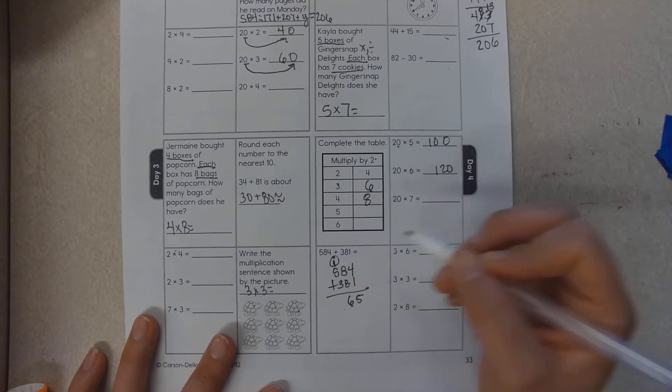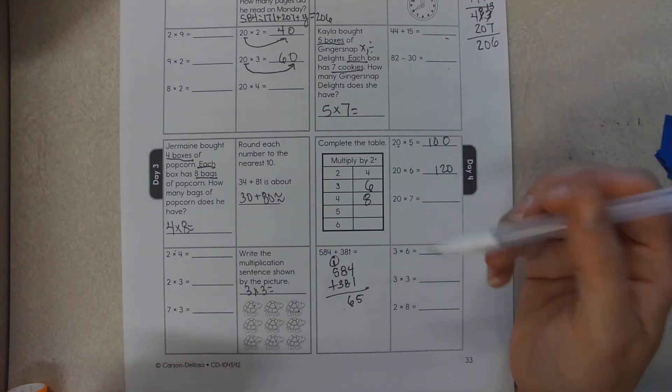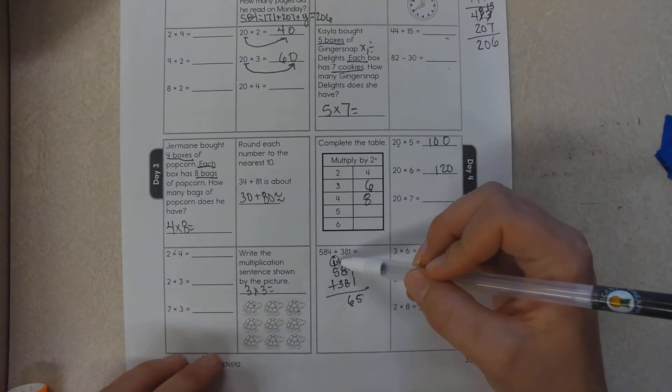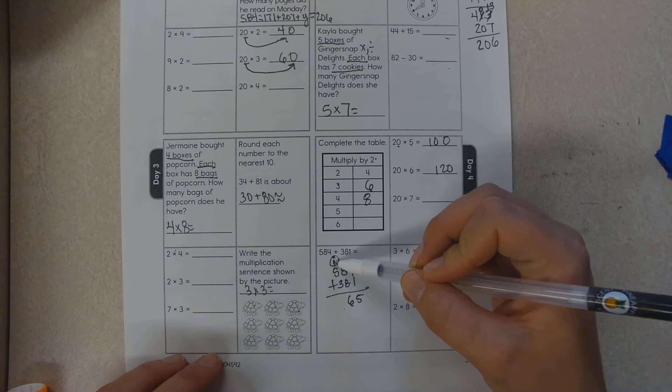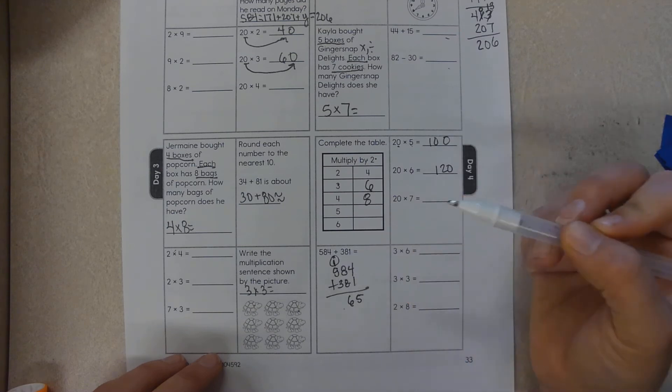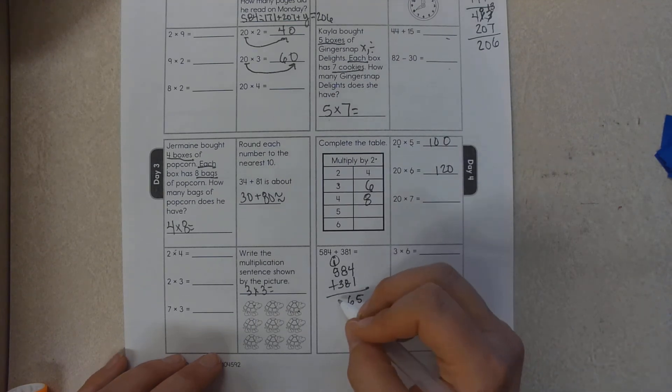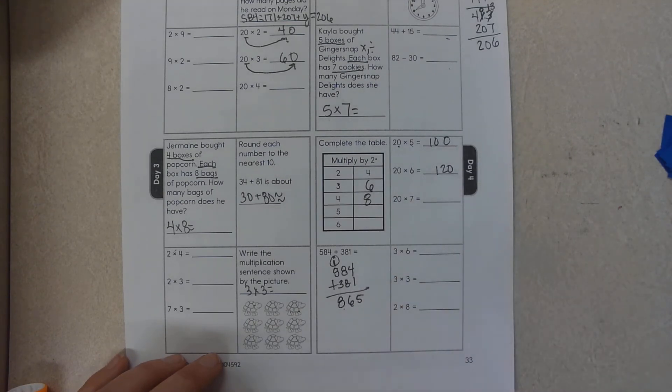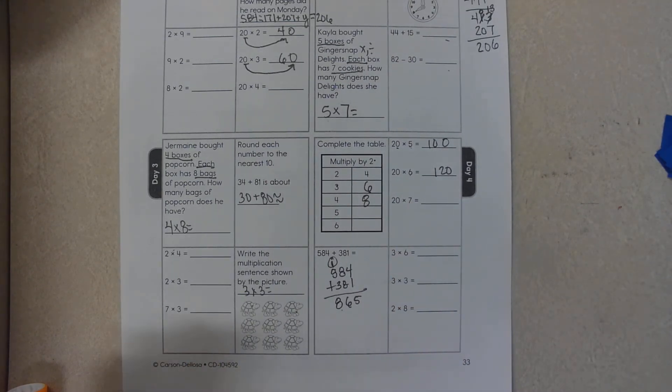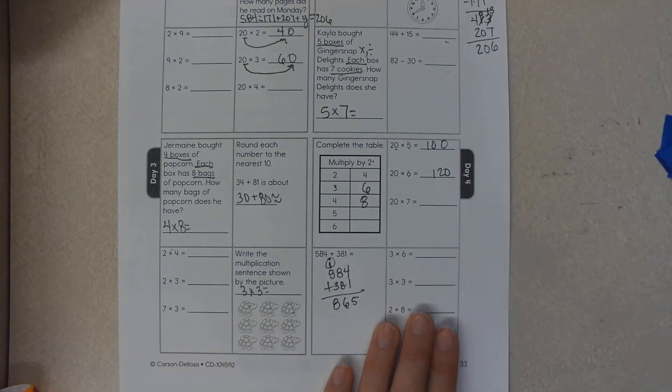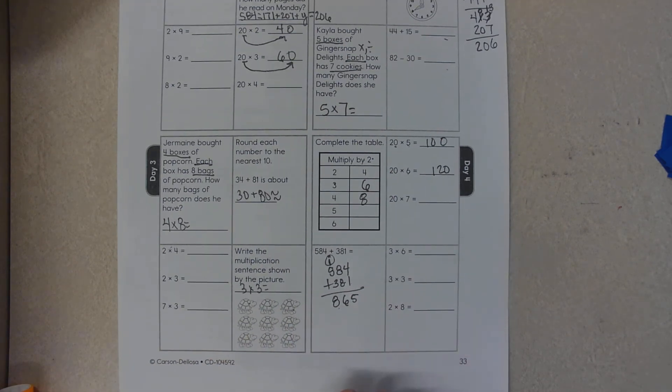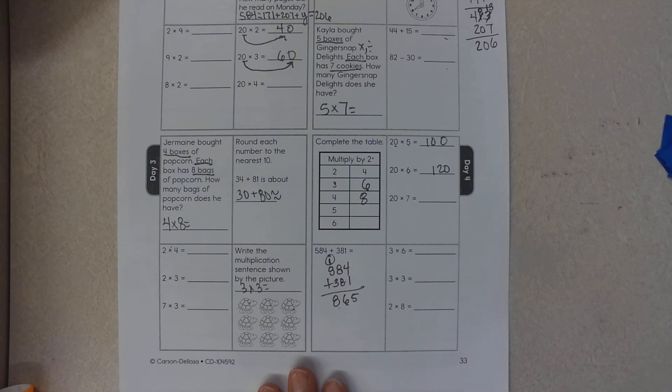Or you can carry your ten tens up to the hundreds place, and you can say one plus five is six hundreds. Six hundreds plus three hundreds is eight hundreds, so my answer is 865. These you can do on your own, and this concludes today's lesson.